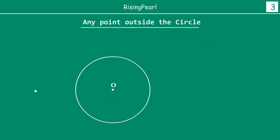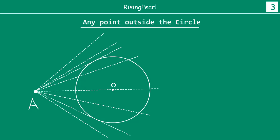Now we will take a point which is outside our circle. So this is a circle, and this is point A, which is outside the circle — it is not on the circle, it is not inside the circle, it is outside the circle. Now you can draw all of these lines. Here I have drawn all these lines. You will notice that there are only two lines, highlighted by bright yellow, where the straight lines touch the circle at only one point — here and here.